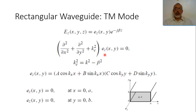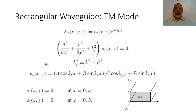By using separation of variables, we can represent Ez as a function X of x multiplied by function Y of y. In this case, the waveguide equation will be represented as two ordinary differential equations, one of x and one of y. By solving these, we obtain the mode function Ez as a function of x and y as: cosine(kx·x) plus b·sin(kx·x), multiplied by c·cosine(ky·y) plus d·sin(ky·y).